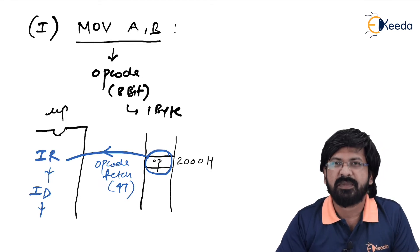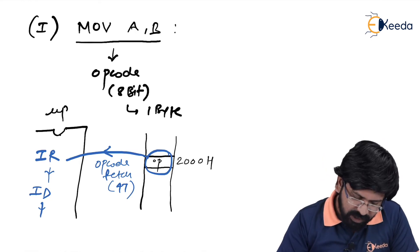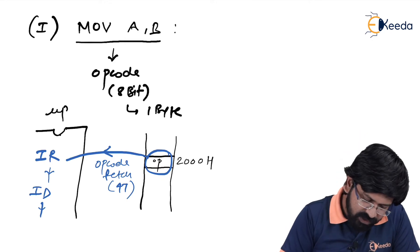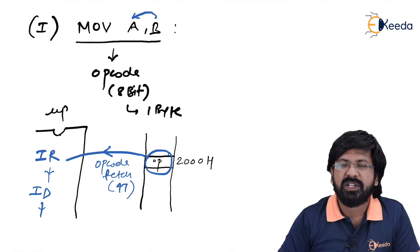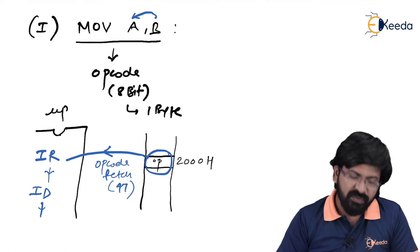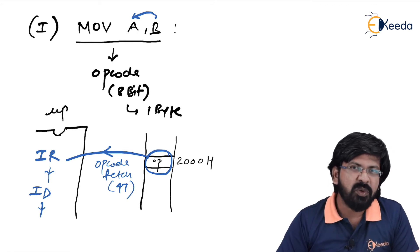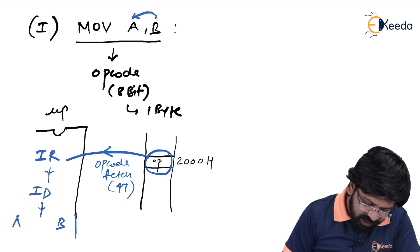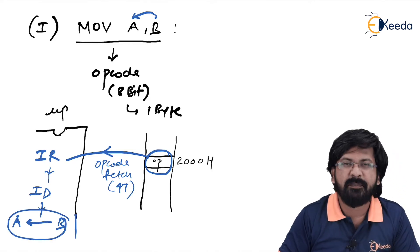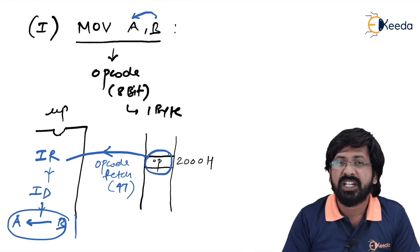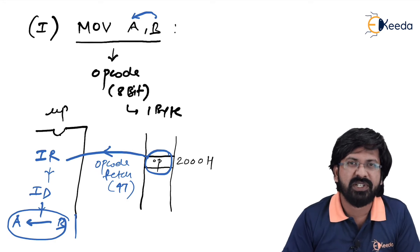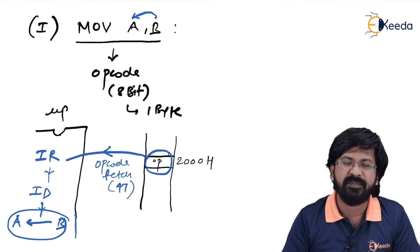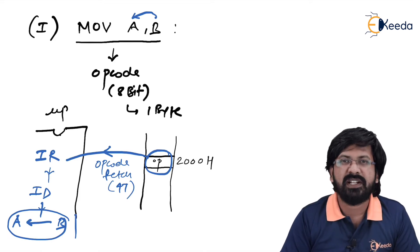Step number 2 is over because the complete instruction is read — after the opcode there is no operand. Step number 3 is to execute the instruction. MOV A,B moves data from B to A. Both B and A are registers internal to MUP, so this execution is completely internal — no external memory operations involved. Therefore step 3 requires no extra machine cycle. Conclusion: MOV A,B has only one machine cycle — opcode fetch — with 4 T-states.